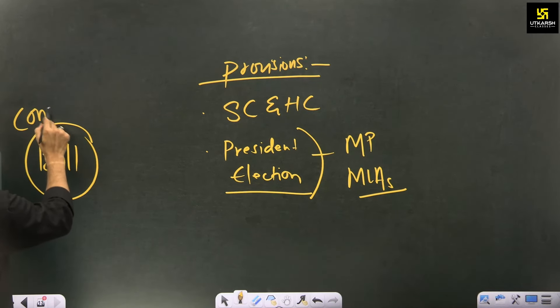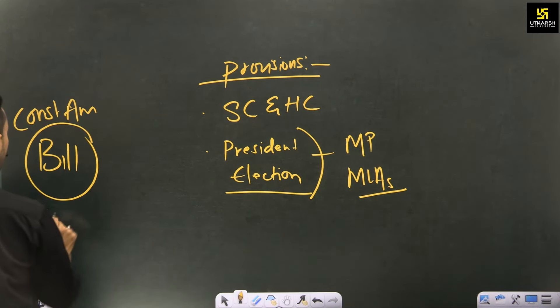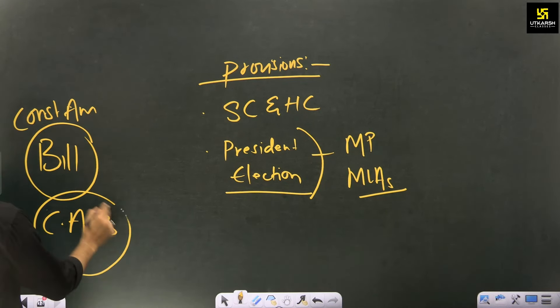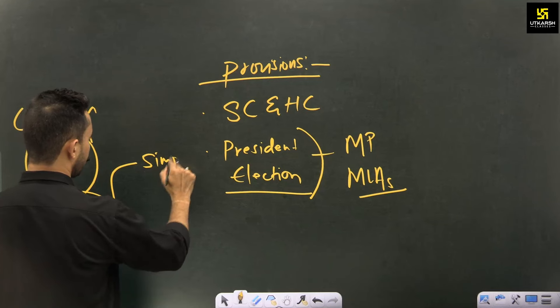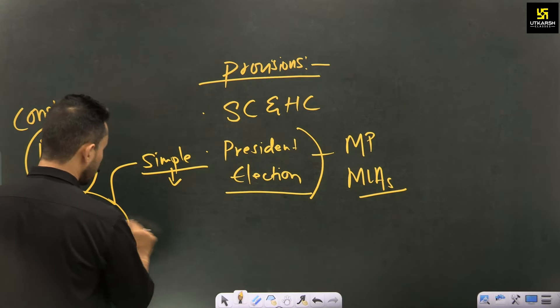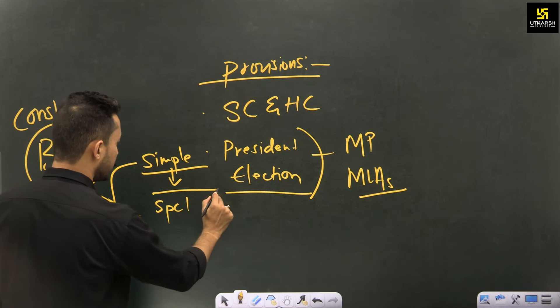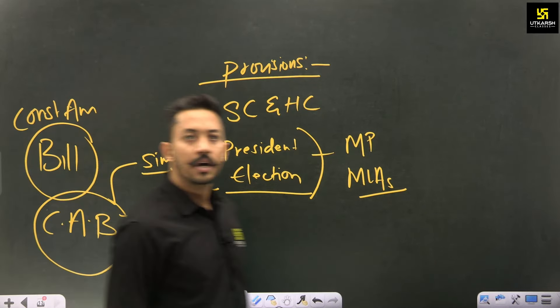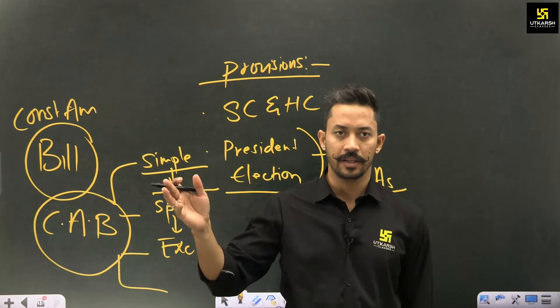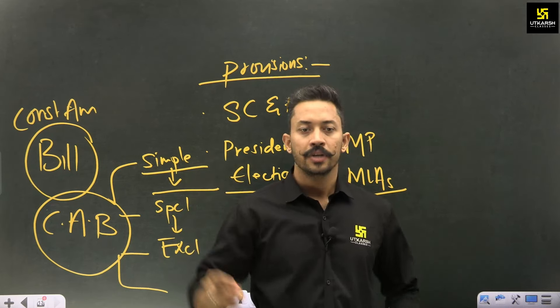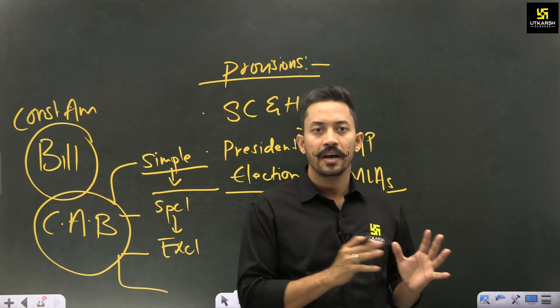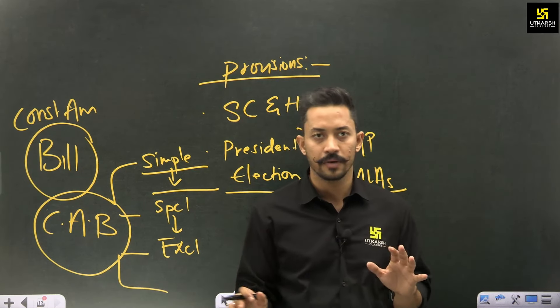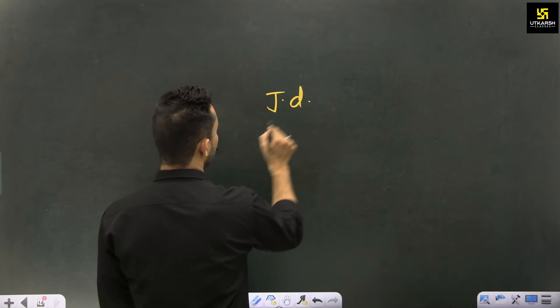So remember: any provision in the constitution which is related to the interests of states — if you want to bring changes in those provisions, you must use exclusive majority under Article 368. The bill brought to Parliament to make changes or amendments to the constitution is called a Constitutional Amendment Bill. To pass it: for new state formation, simple majority suffices; for most provisions, special majority under Article 368 is required; and for state-interest provisions, exclusive majority is required.